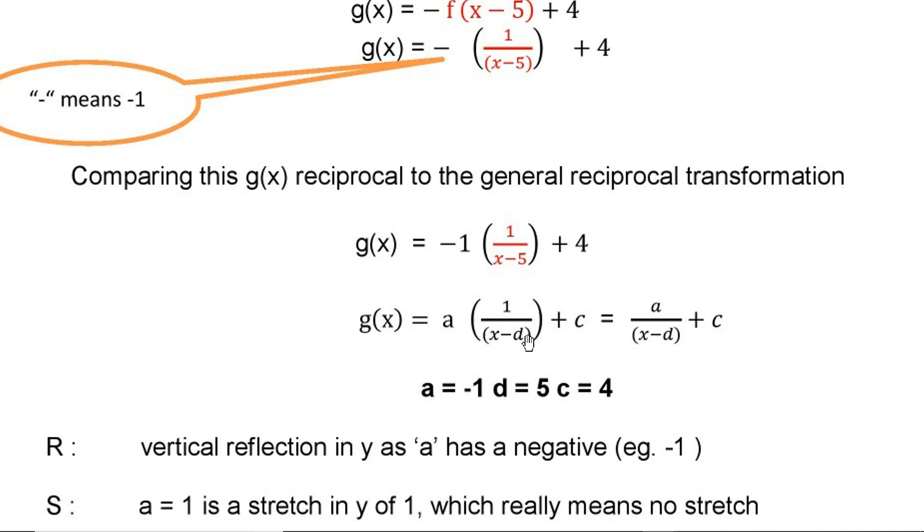What is a here? -1. a is -1. What is d here? d minus d is -5, that is d is 5. What is c here? c is 4.